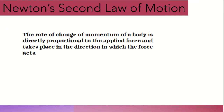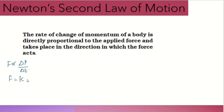Newton's second law of motion states: the rate of change of momentum of a body is directly proportional to the applied force and takes place in the direction in which the force acts. So F is directly proportional to the rate of change of momentum, which is delta P divided by delta T. We write F is equal to a constant K into delta P divided by delta T.